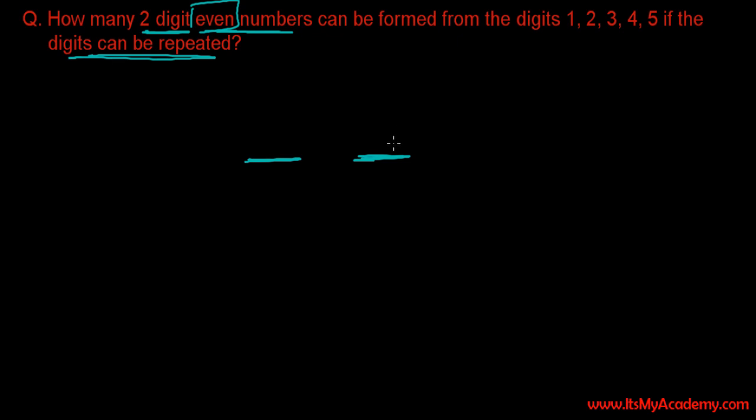Even number means at last it should be either 2 or it should be either 4. So to make it even we have the number of selection only 2 here. Only 2 possible number of selection is there for this position.